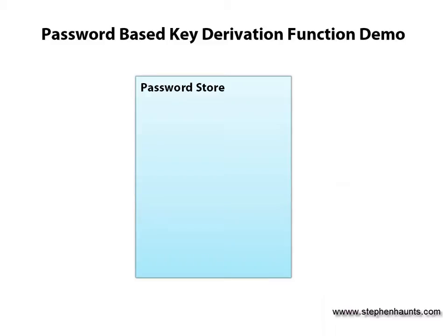Before we go into the demo, let's visualise the code. The sample project contains a class called PasswordStore. PasswordStore has two public methods: StorePassword and AuthenticateUser. StorePassword takes a username and a password and stores that combination into a dictionary. Normally you would store this in a database, but for the benefits of this demo a dictionary is fine. The password will be encoded using the password based key derivation function, RFC2898DerivedBytes.